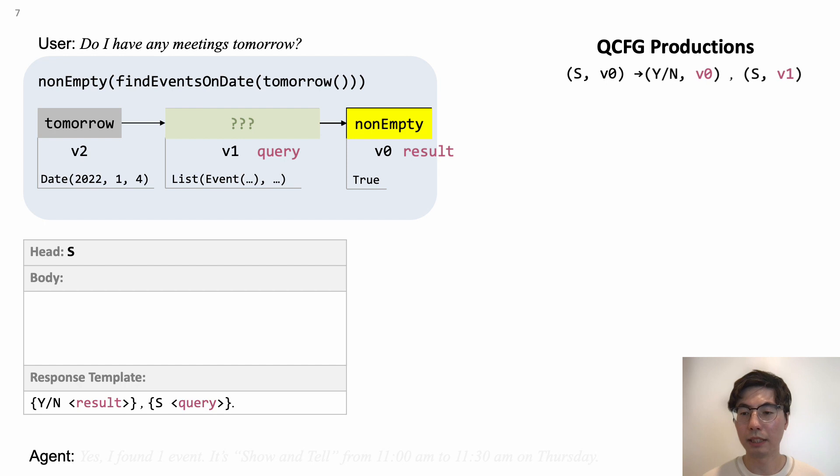Then we move to the next non-terminal YNV0. Unlike the previous transduction rule, this one only checks the value of a node, but it fails because the value mismatched.